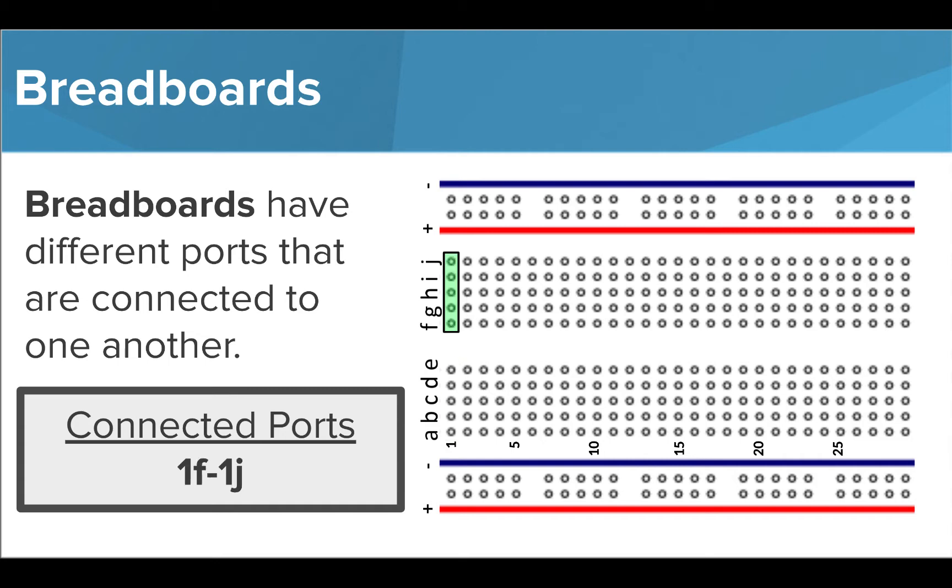Similarly, all ports on the other side of the board are connected. Port 1f is connected to port 1g, 1h, 1i, and 1j. Note that the ports a through e are not connected to ports f through j.